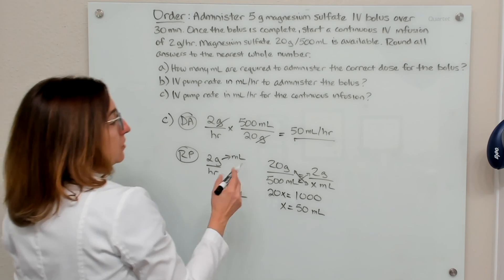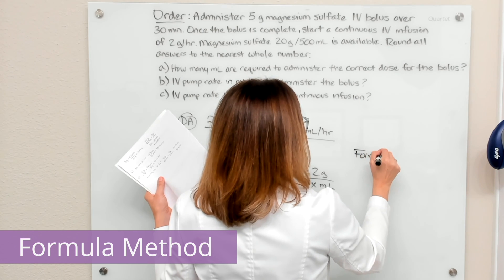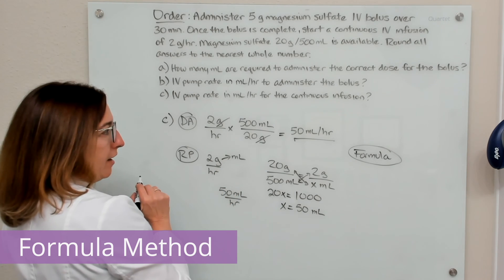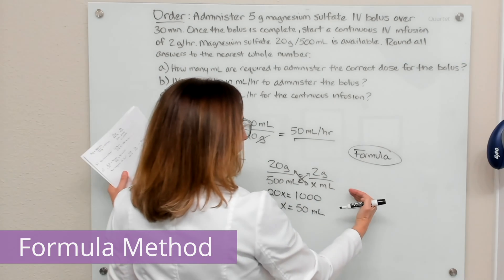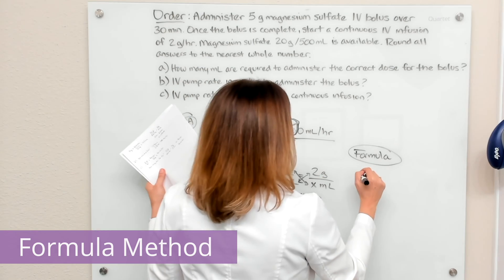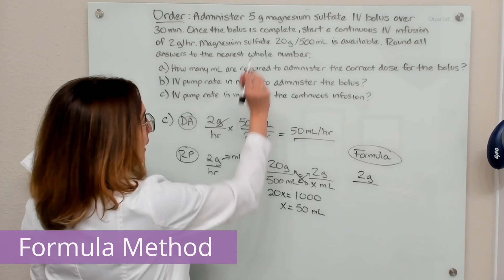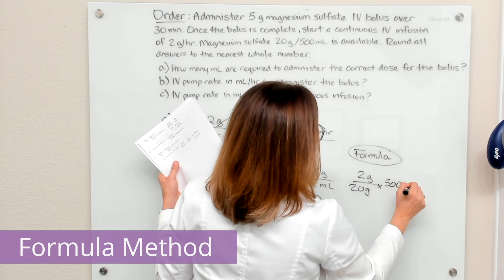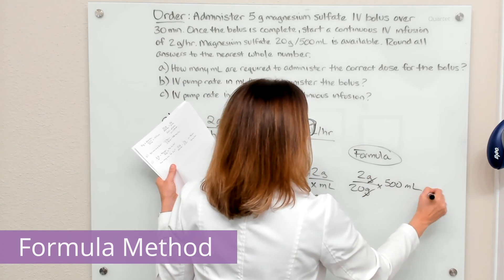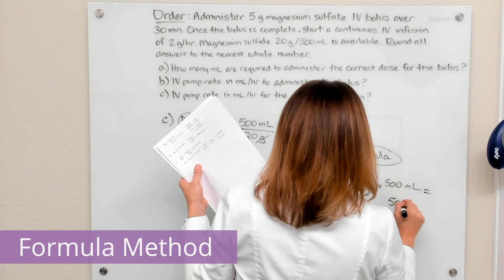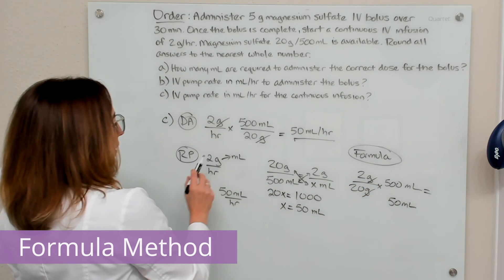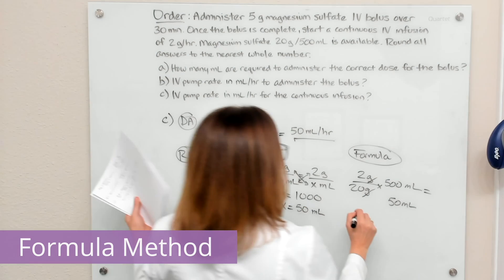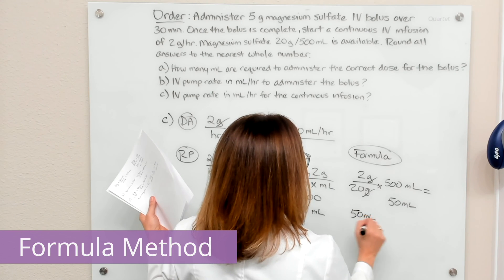We can also do this with the formula method. We want to figure out how many milliliters it takes to give two grams, so we use desired over have times vehicle. Our desired is two grams, and what we have is 20 grams in 500 mL. Our grams cross off, and we multiply this out to get 50 milliliters. Since the ordered rate was two grams per hour, and 50 milliliters gives us two grams, that would be 50 milliliters per hour.